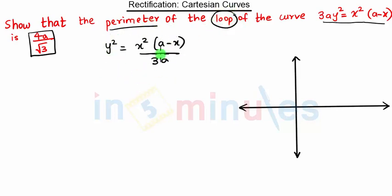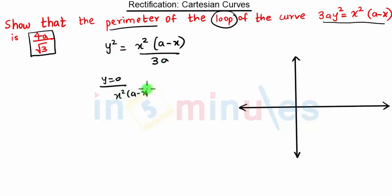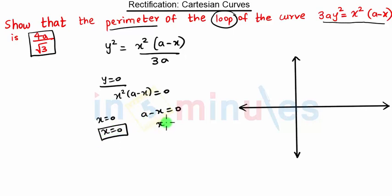To find where this loop intersects, we put y = 0. When we put y = 0, we get x²(a − x) = 0, so either x = 0 or a − x = 0. This gives us x = 0 as one point and x = a as another point — two points on the x-axis.